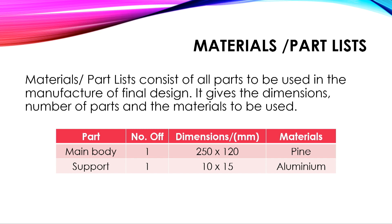For example, for the main body we have one number, and dimensions are 250 by 120 millimeters, and the material is pine. Secondly, support: one number, dimensions are 10 by 15 millimeters, and the material is aluminum.